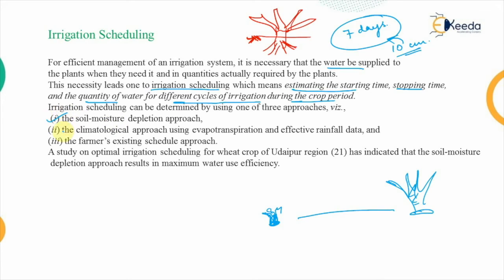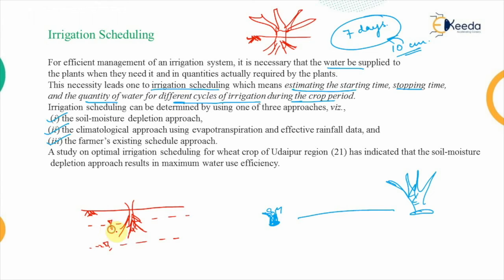The three approaches are: first, the soil moisture depletion approach; second, the climatological approach, which uses evaporation and rainfall data; and third, the farmer's existing scheduling approach. In the soil moisture depletion approach, the seed is sown and the existing water level in the root zone is monitored. As the plant uses water, the moisture level within the soil depletes, and irrigation is applied only when the water level has sufficiently depleted.